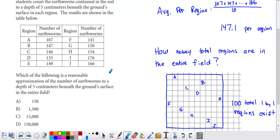It says, which of the following is a reasonable approximation for the number of earthworms to a depth of 5 centimeters beneath the ground surface for the entire field? So what we're going to do is we're going to assume that the average of these 10 regions that were selected, right? We don't have the entire field covered by these 10 regions that I'm just kind of highlighting right here. These were the only areas of the entire field, which is outlined by this big blue square that we're actually studying.